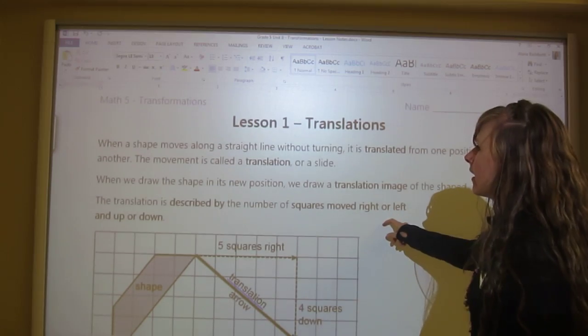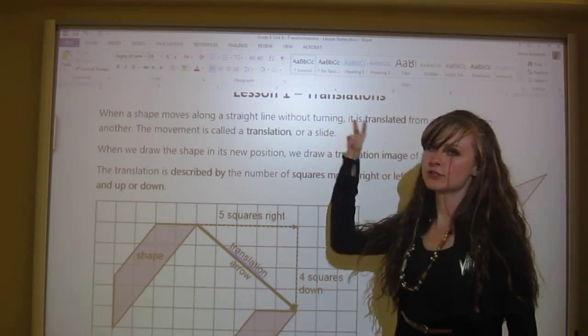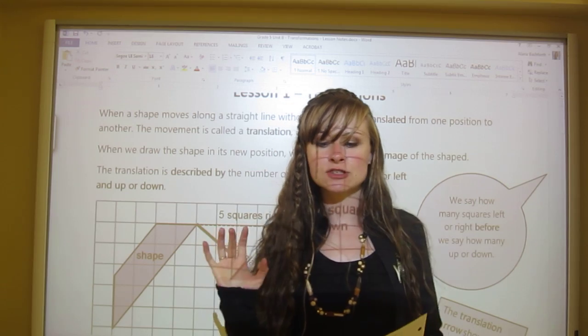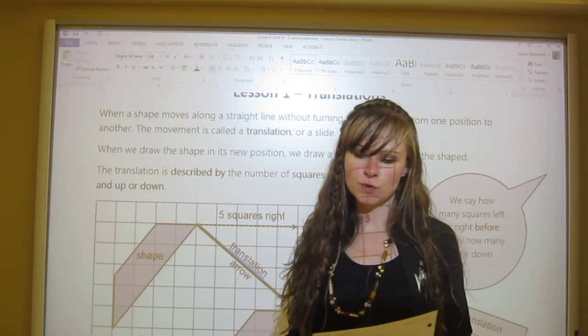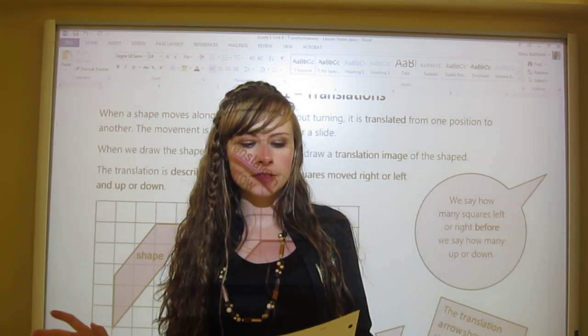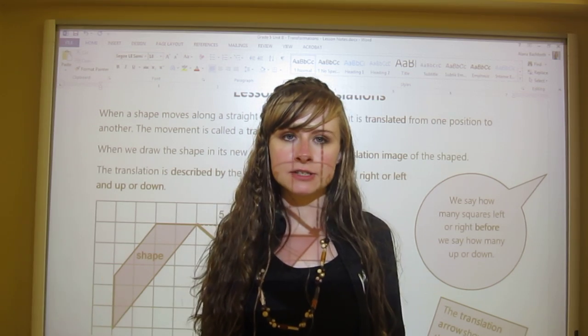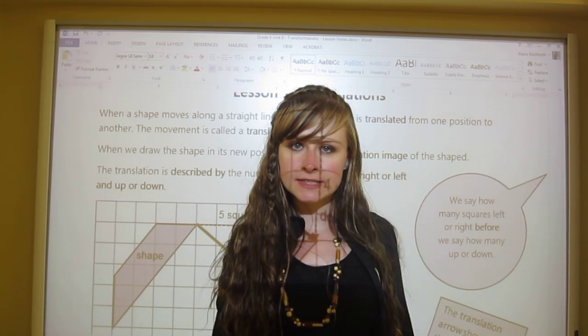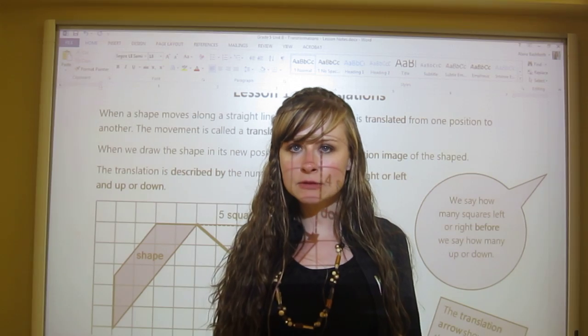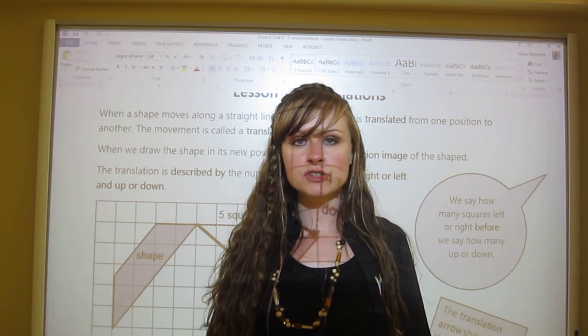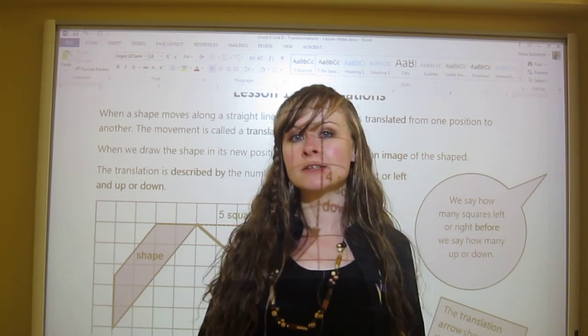When a shape moves along a straight line without turning, it is translated from one position to another. The movement is called a translation or a slide. So if it slides and stays the exact same, just moves positions, it's called a translation or the shape has been translated.